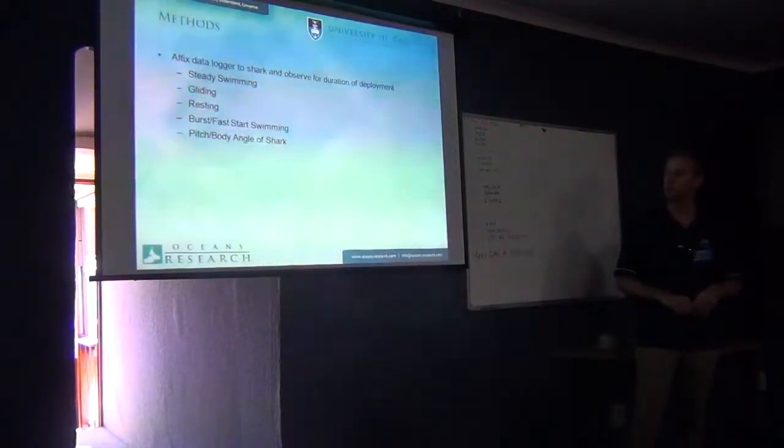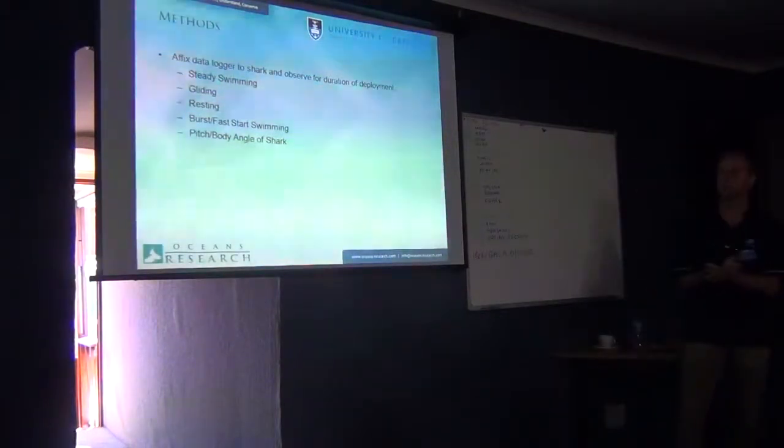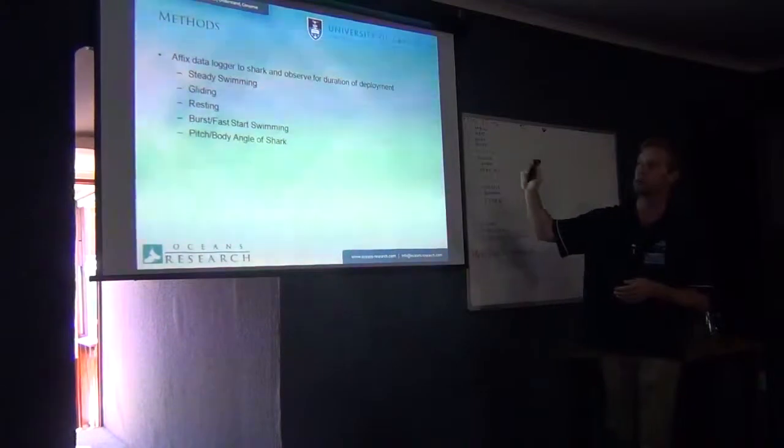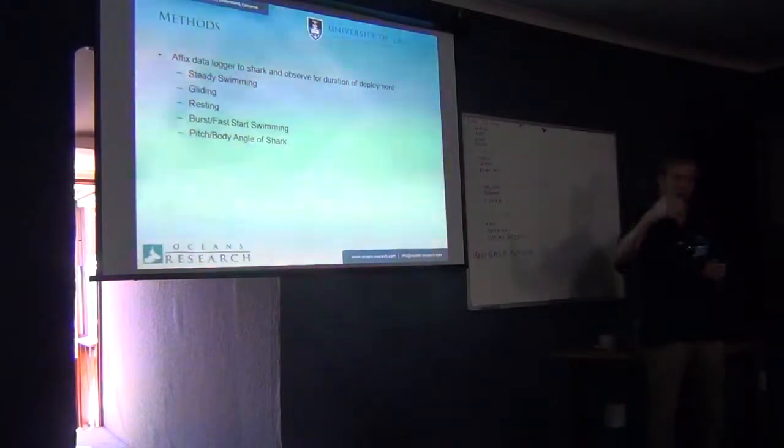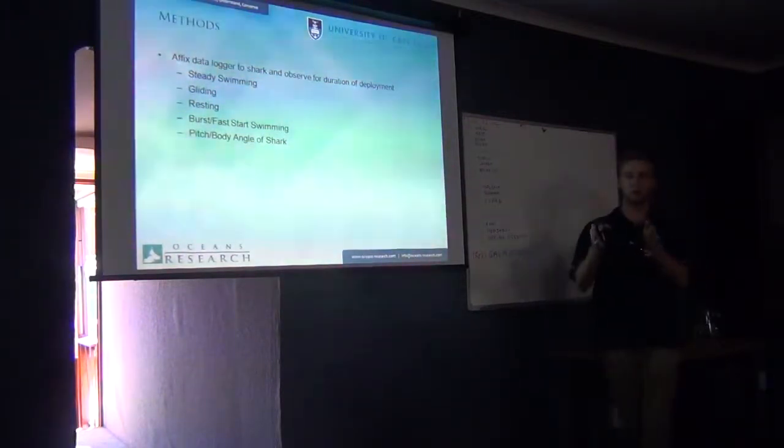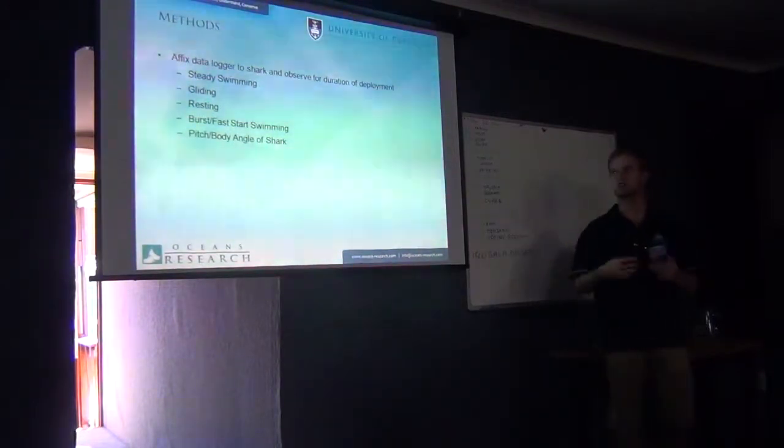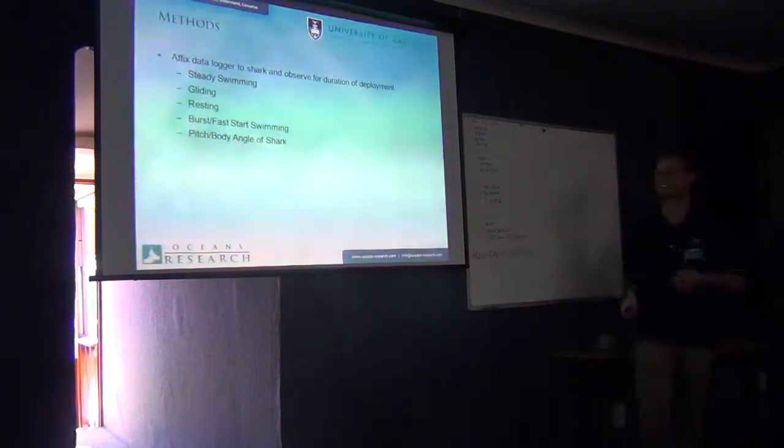So getting into the methods now, I selected four behaviors that I thought might be most easily identified by an observer watching these animals in the tank. These were also based on similar studies that had been published. And these were steady swimming, gliding, resting, and burst swimming. So steady swimming I defined as this regular rhythmic undulations of the tail around the tank. Even frequency, even periodicity of your amplitude of the tail beat. Just everyday swimming. Gliding I defined as moving but with the absence of tail strokes. So when the animal was gliding, essentially.